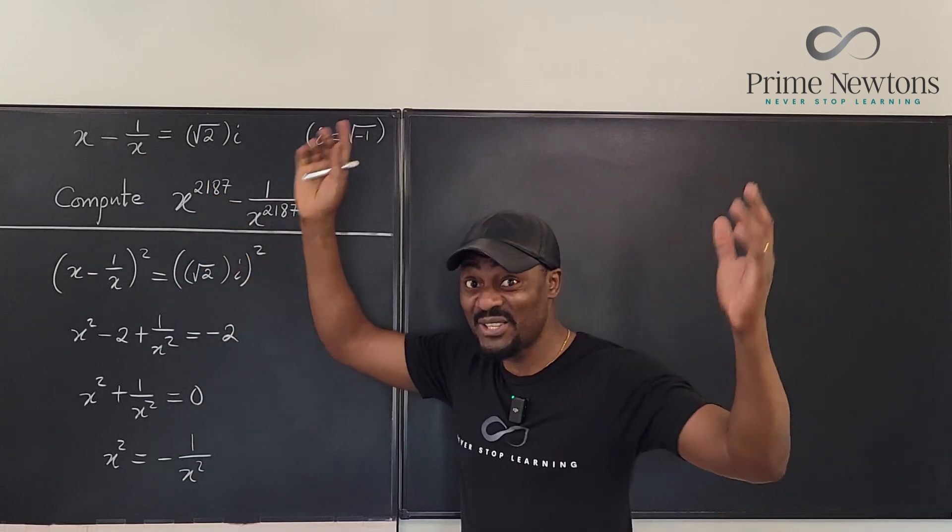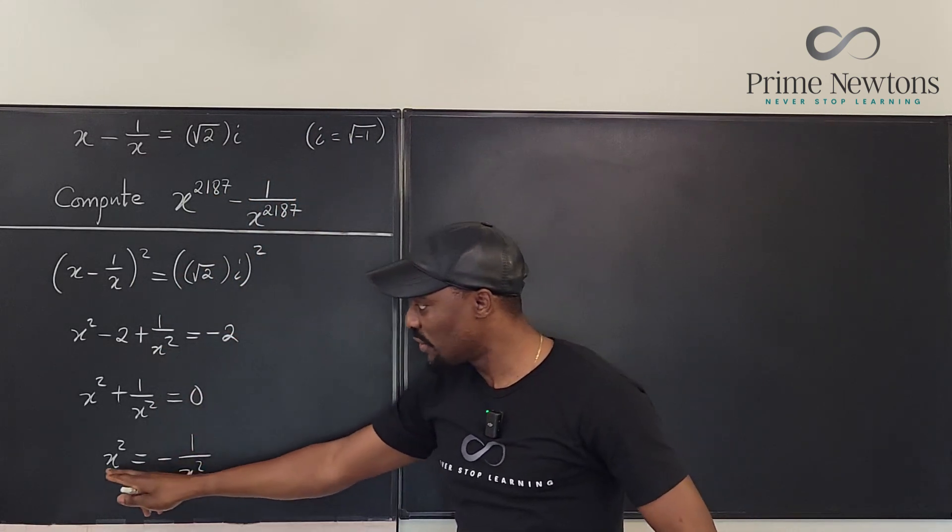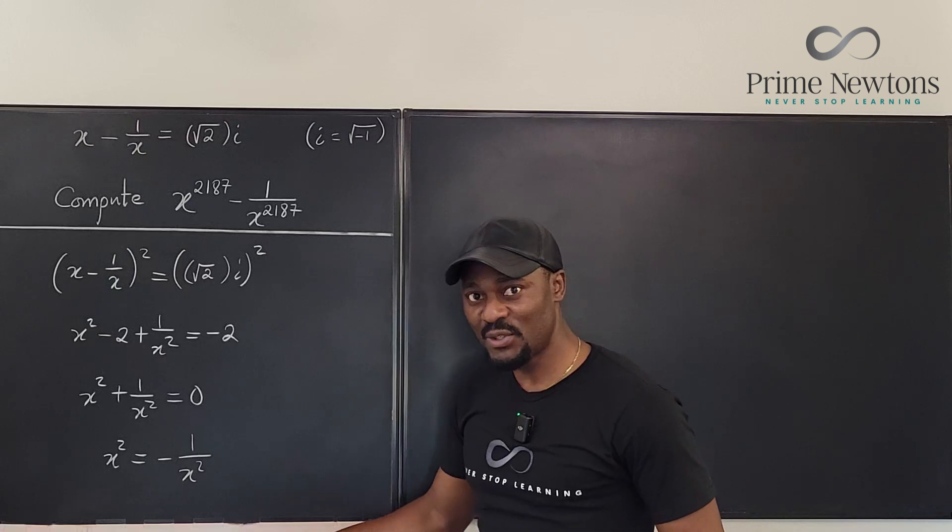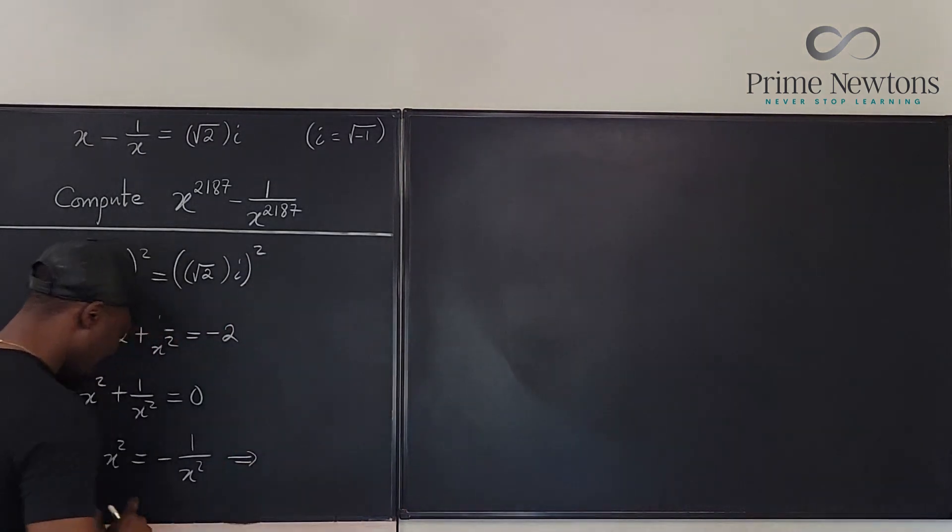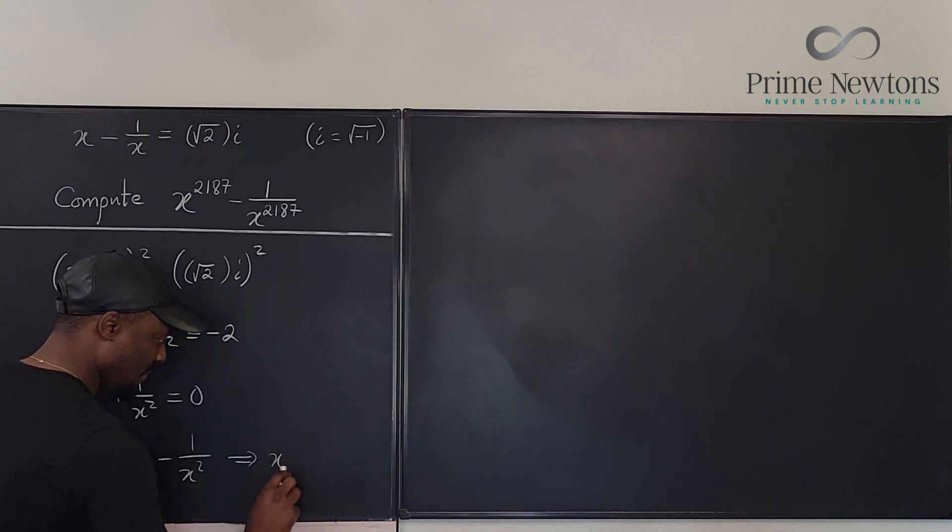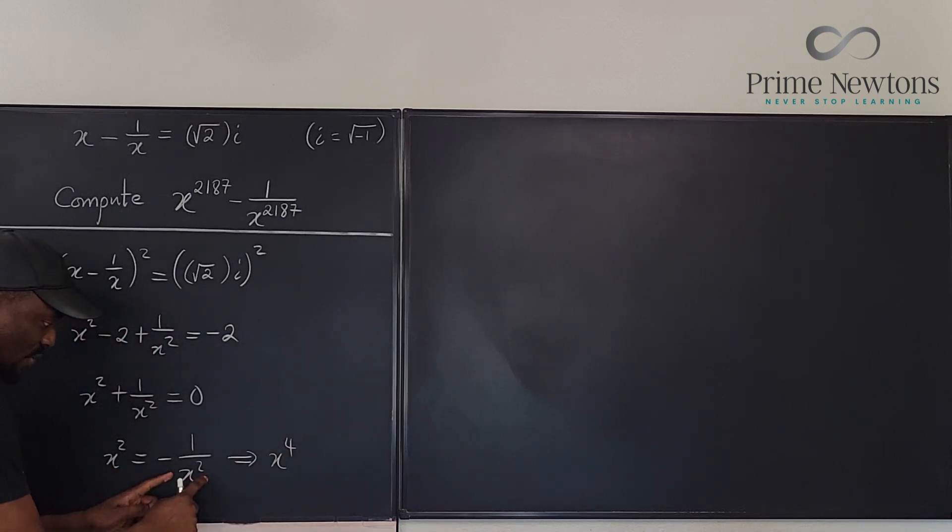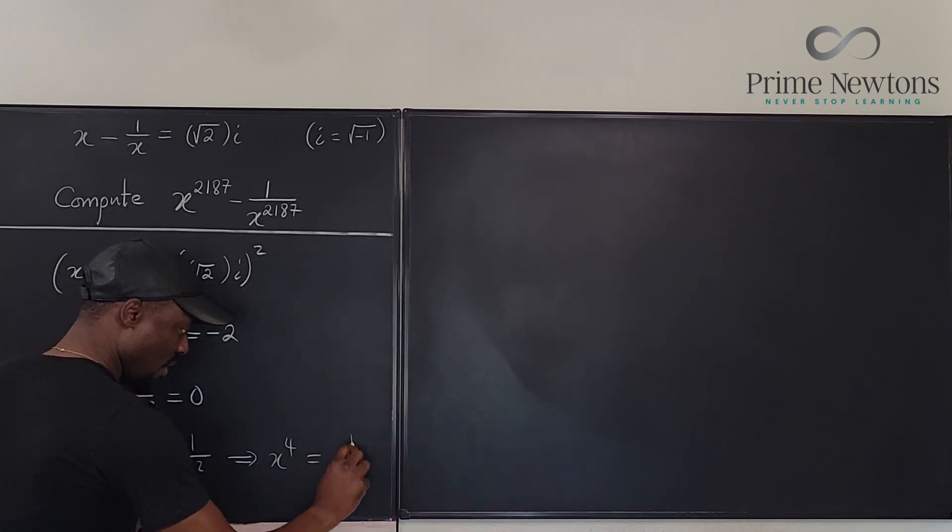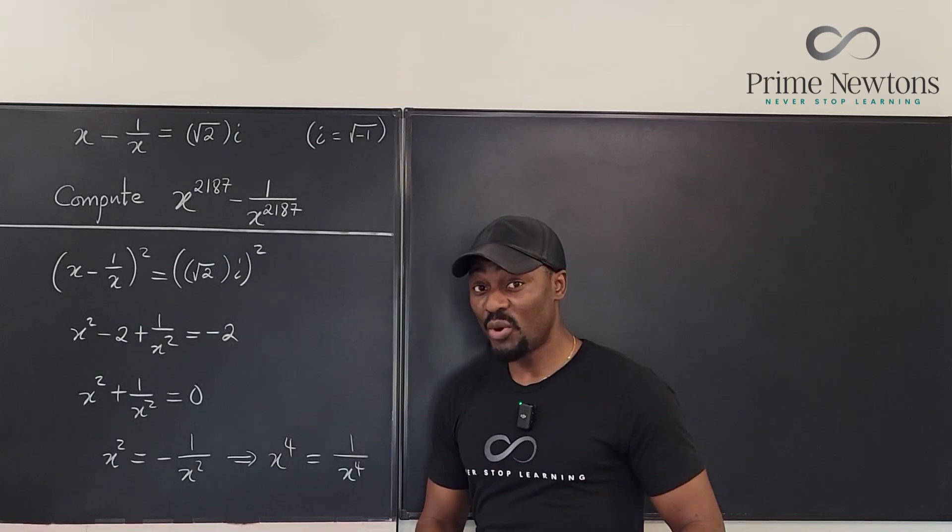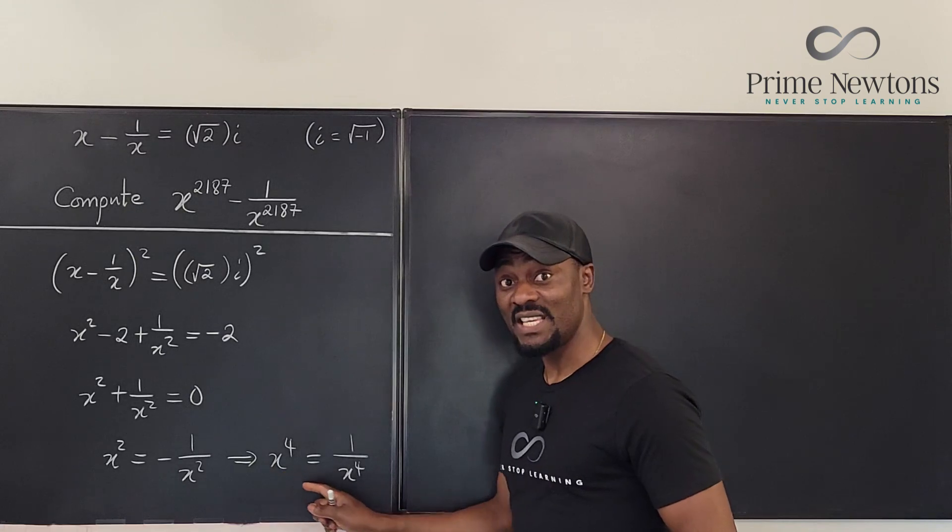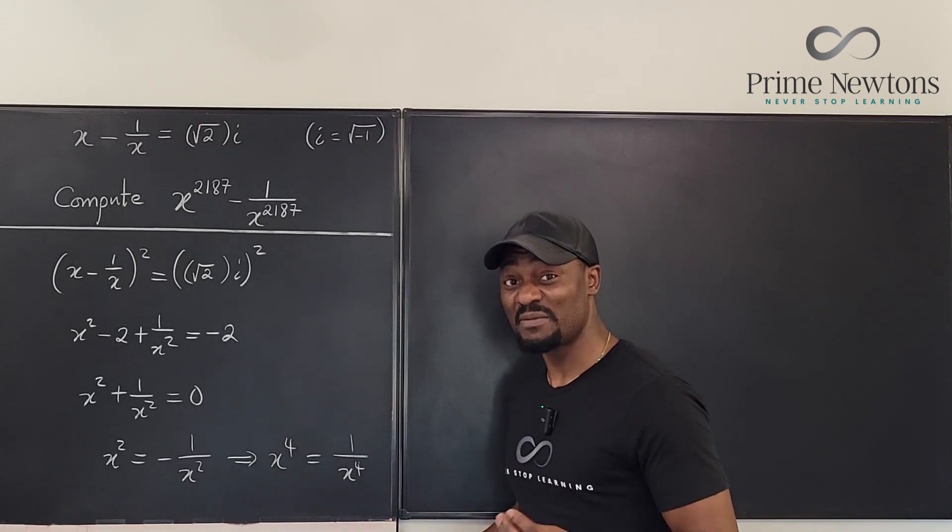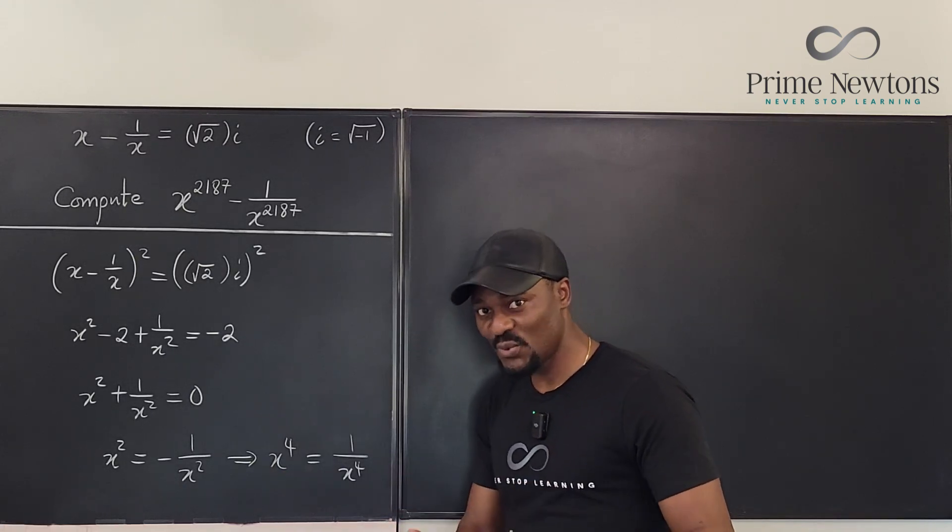If you square both sides, this means that this squared is going to be x to the fourth, and this squared is going to be 1 over x to the fourth. At this point you may be tempted to tell yourself that you found a very easy equation to solve and you can find x. But this is what you're going to notice: if you try to solve this for x, you multiply both sides by x to the fourth, you're going to get x to the eighth equals 1.